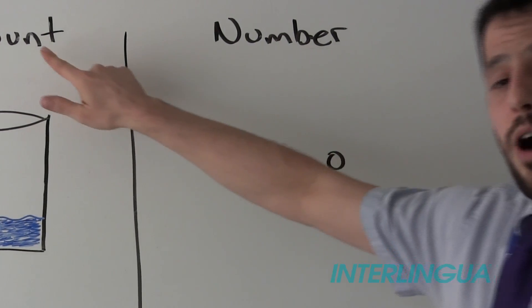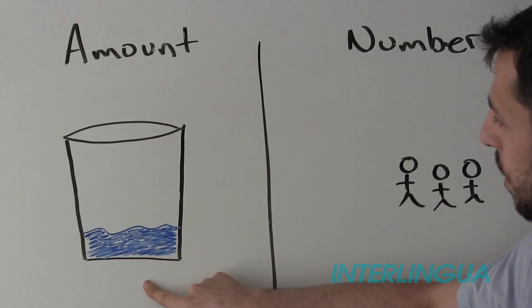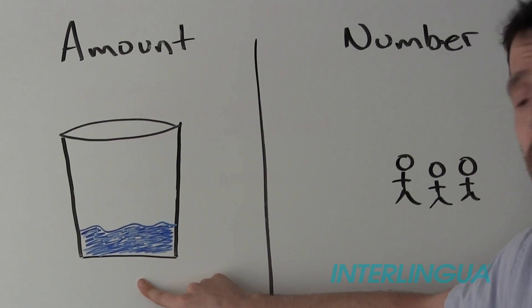We use amount when we can't count. For example, the amount of water in the glass is small.